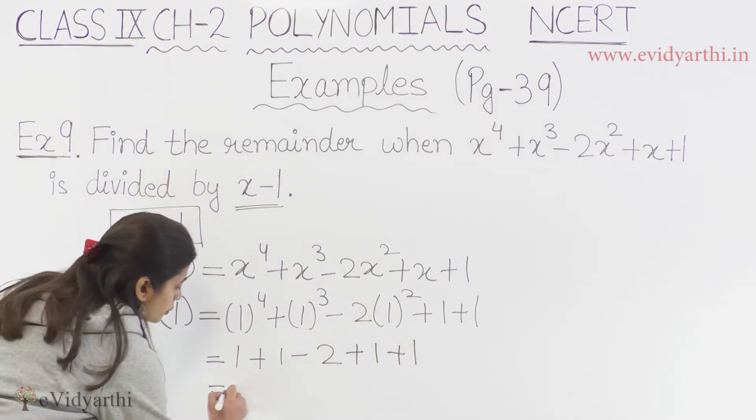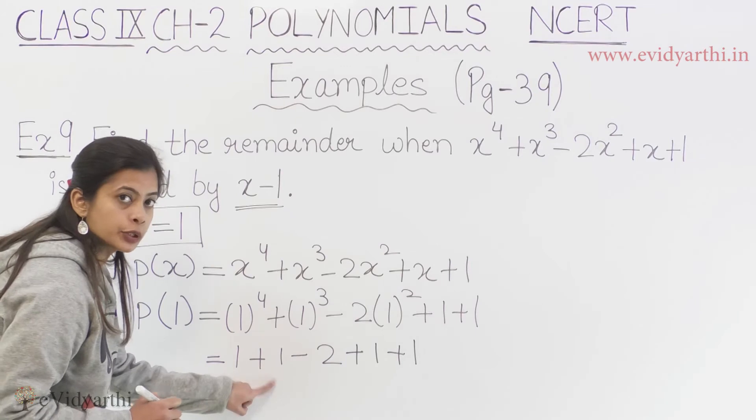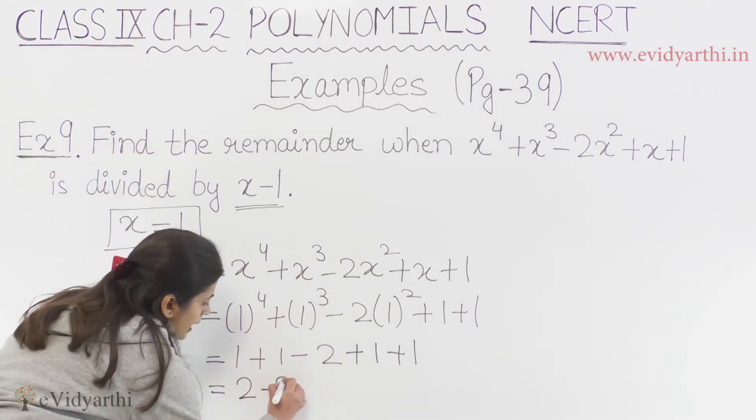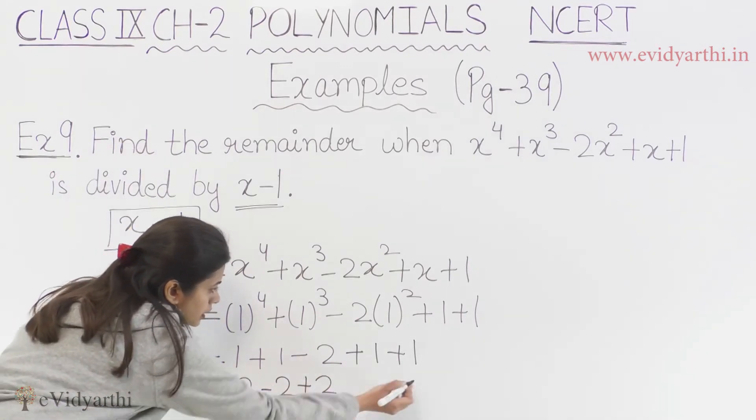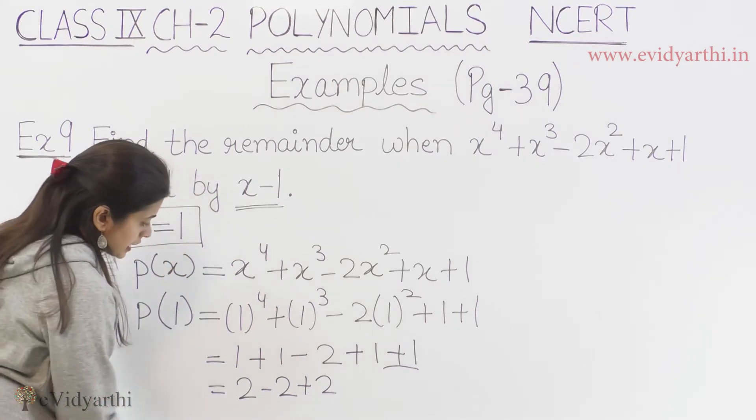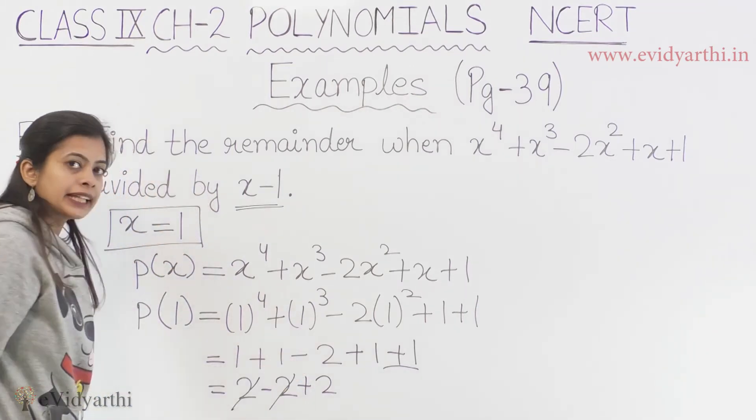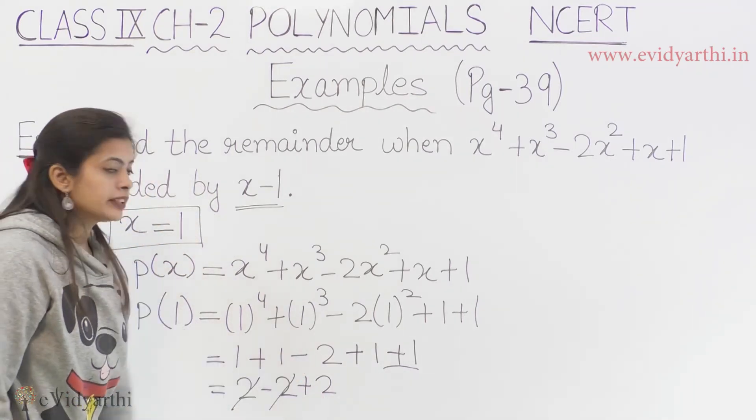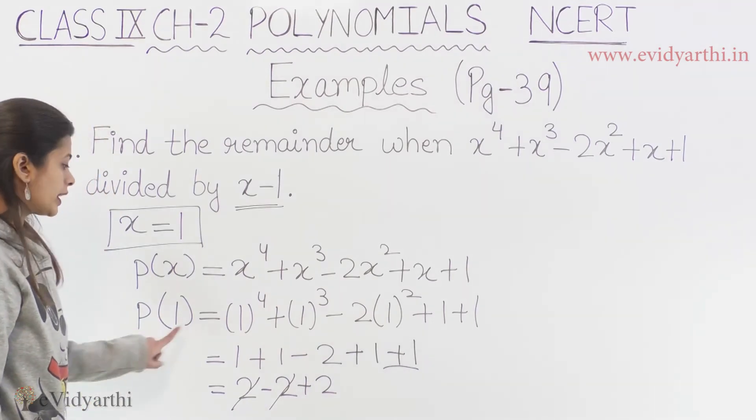Now if we calculate here, we have 2 minus 2 plus 2. We have 2 from here. Ultimately, we have p(1) equals 2.